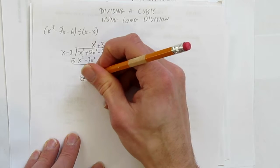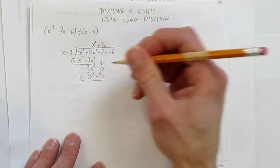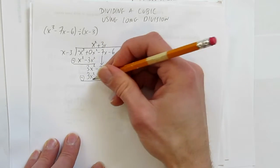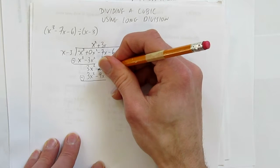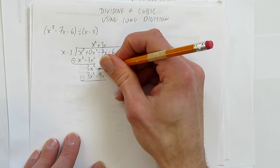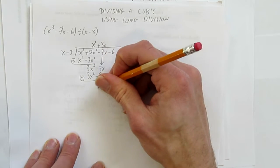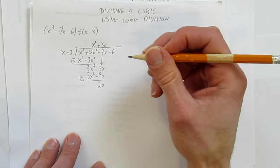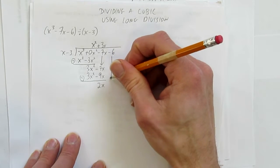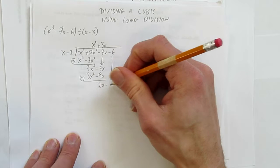Subtract everything: 3x² - 3x² gives 0. -7x - (-9x) is -7x + 9x, which gives 2x. Bring down the last term: -6.